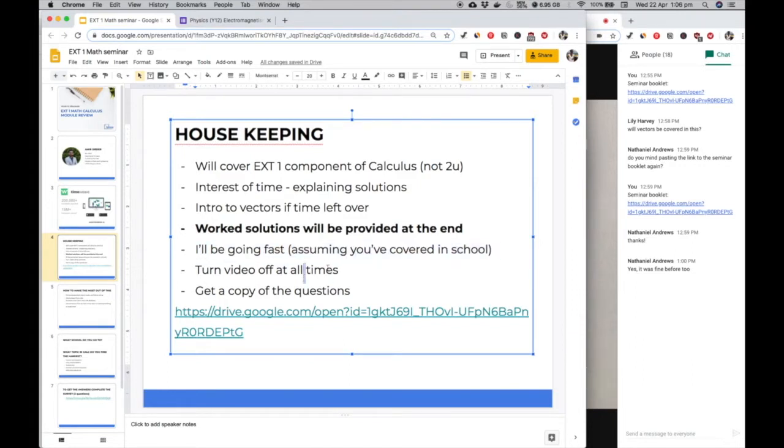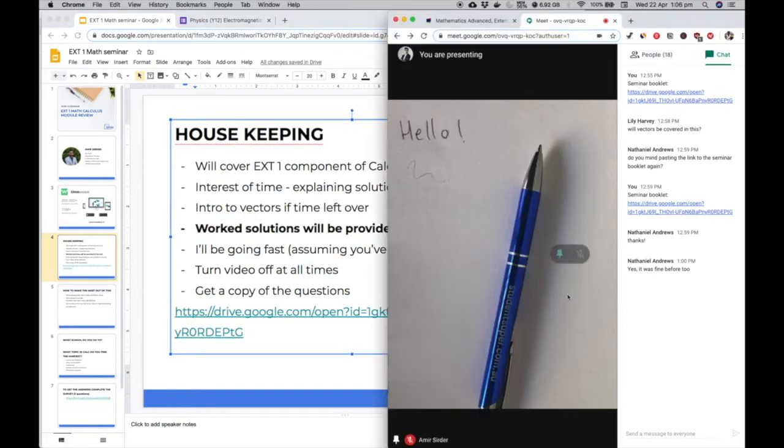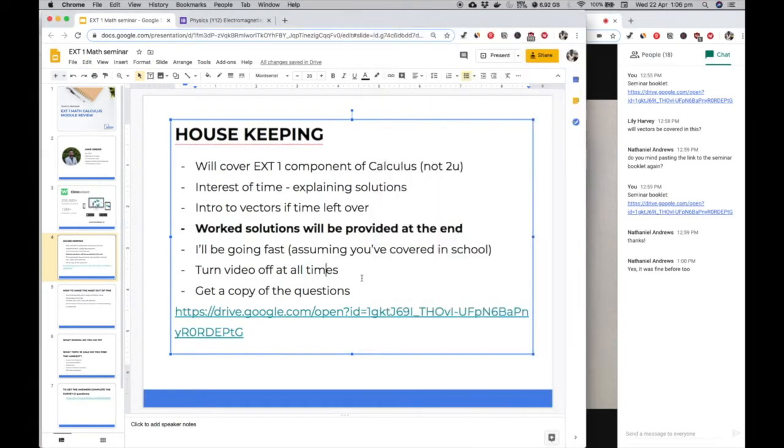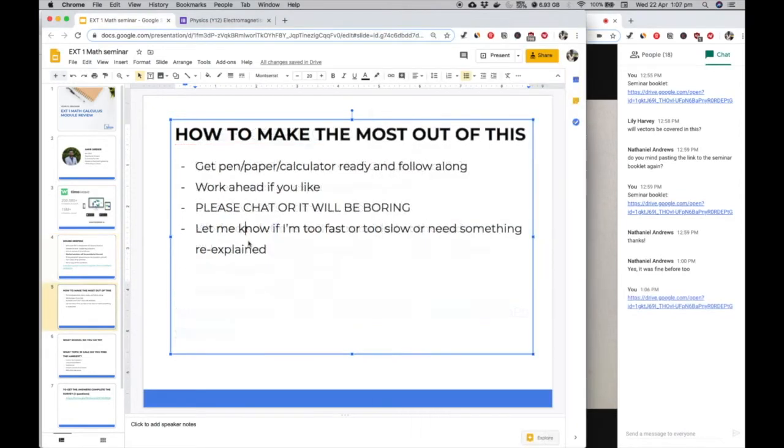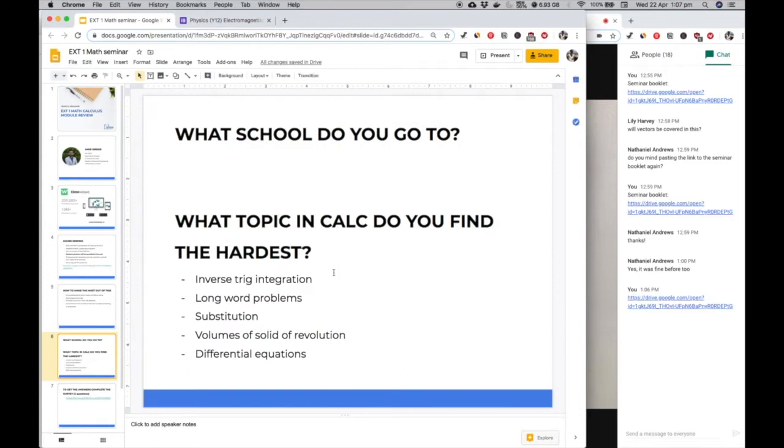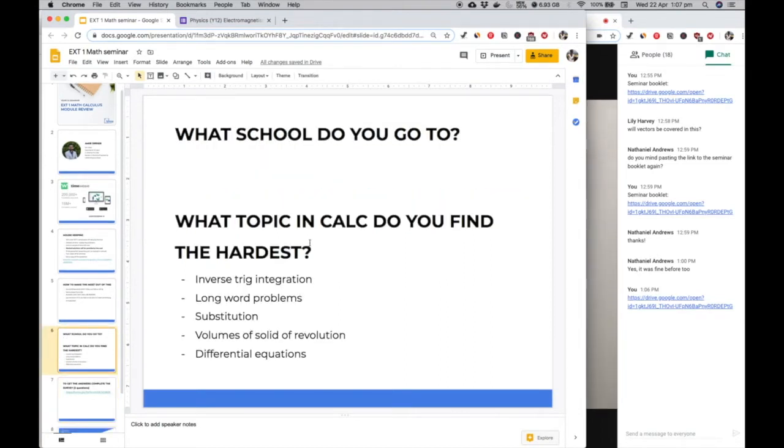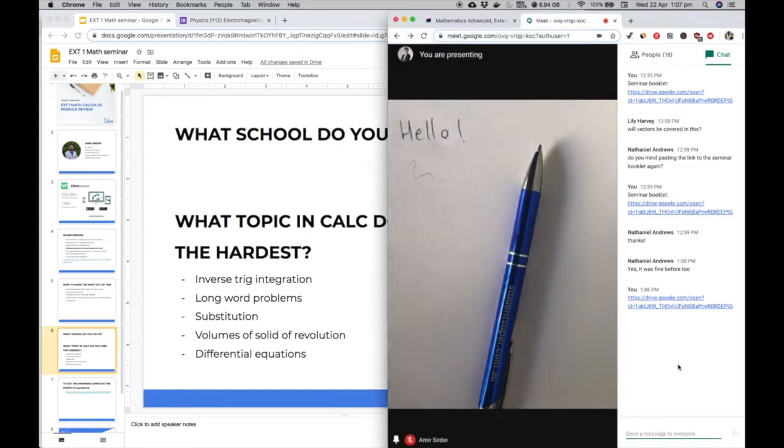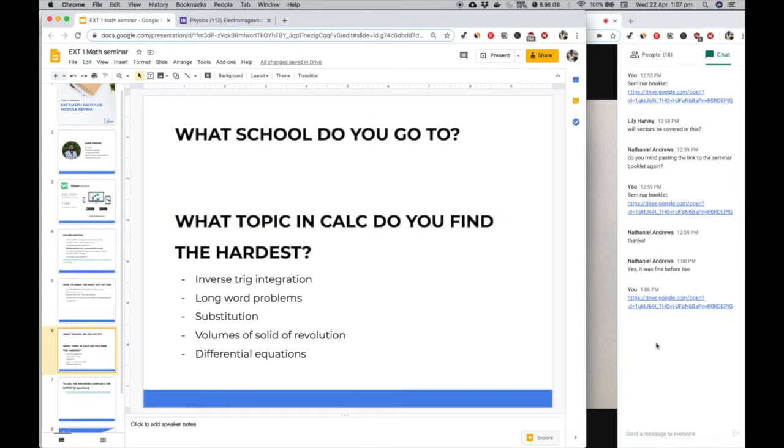Turn off your video at all times. Let me know if you can't hear me or the internet gets weird or you can't see what I'm writing. To get people started chatting, I have two questions: What school do you go to? And what topic in calculus do you find the hardest? Write your answers in the chat. It's good for me so I can see who's engaged and name them when we go through questions.